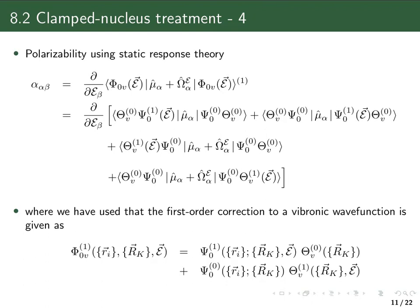Now we have expressions for both the perturbed vibrational wave function and the perturbed electronic wave function. We can look at the polarizability using the static response theory expression from chapter four, where a component of the polarizability is a derivative of the first-order correction to the dipole moment in the presence of a field. We insert the Born-Oppenheimer approximation, expressing vibronic wave functions as products of electronic and vibrational wave functions.